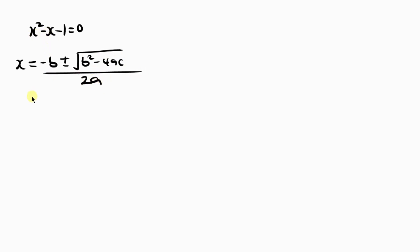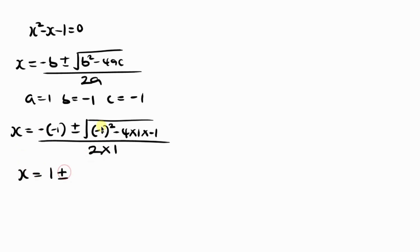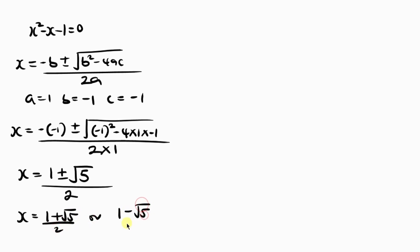Substituting: x equals 1 plus or minus square root of negative 1 squared minus 4 times 1 times negative 1, all over 2 times 1. Solving inside the radical gives square root of 5. So x equals 1 plus square root of 5 over 2, or x equals 1 minus square root of 5 over 2.